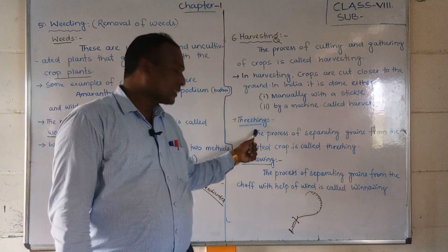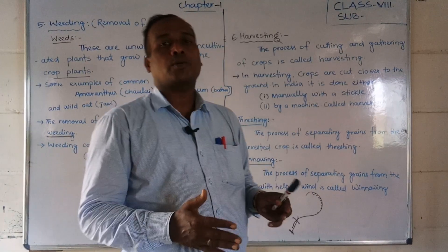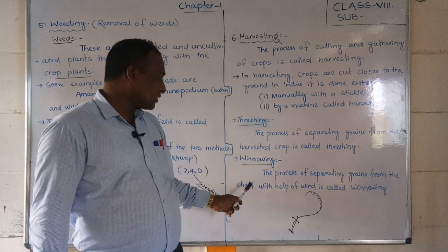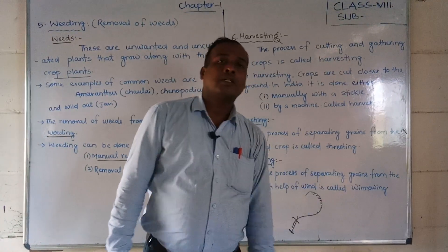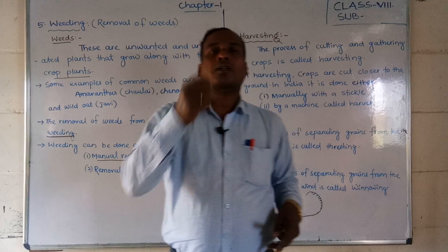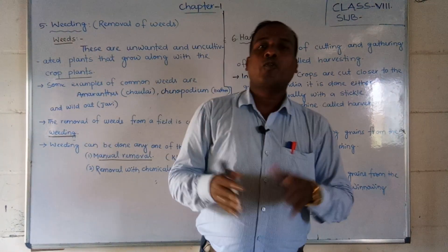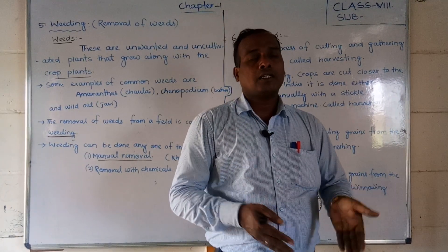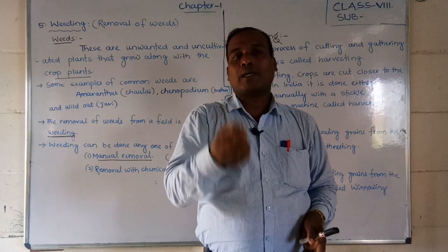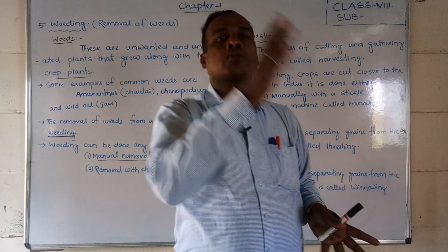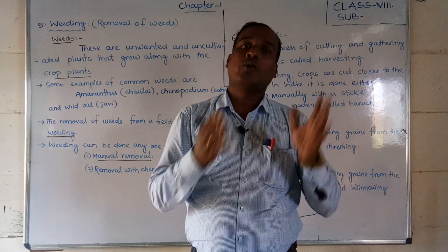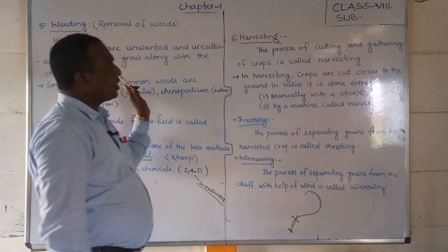Winnowing — you studied this in 6th standard science. Winnowing is the process of separating grains from their chaff with the help of wind. After threshing, small particles and chaff remain mixed with the crops. To filter them out, we do winnowing: from a height, the crop is poured down, the wind blows the light chaff particles to a distance, and the heavier grains fall straight down, separating the crops from the chaff.